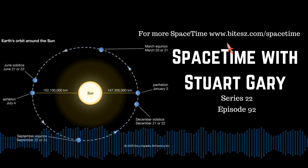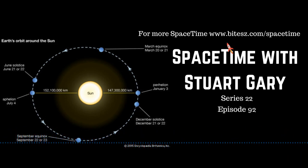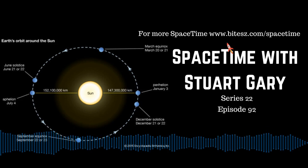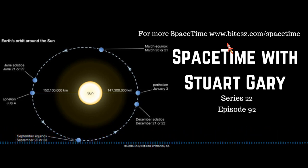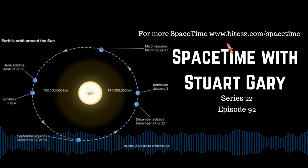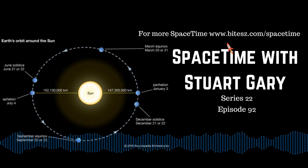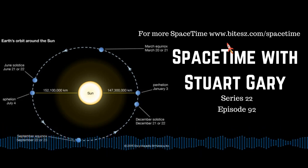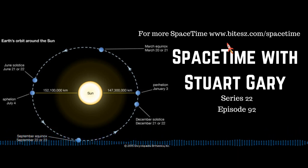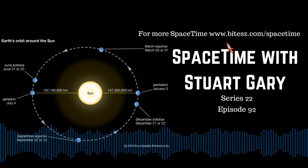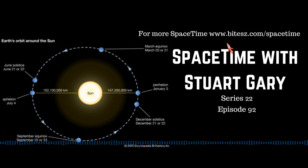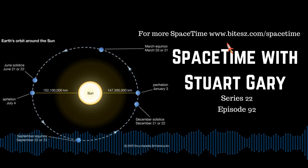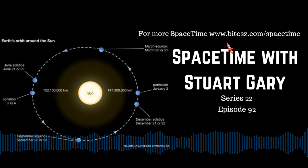An electron volt is a basic unit of particle energy — the amount of energy gained or lost by a single electron accelerating from rest through an electric potential difference of 1 volt in a vacuum, which is exactly 1.602 × 10⁻¹⁹ joules. And thanks to Einstein's famous mass-energy equivalence equation E = mc², the electron volt is also a unit of mass in physics and astronomy.